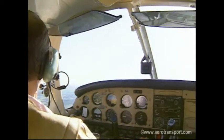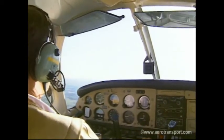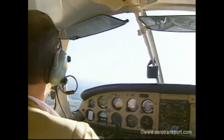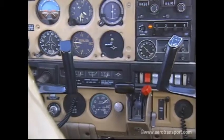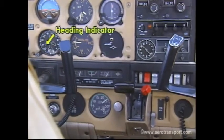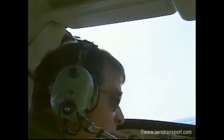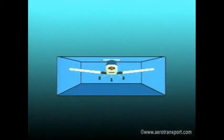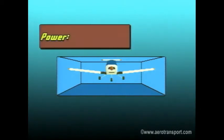To maintain a constant heading, point the aircraft in the direction you want to go, then use the heading indicator as a cross-reference. As always, keep a vigilant lookout for other aircraft. To maintain level flight, use the elevators to compensate for any changes in pitch and maintain a constant altitude.